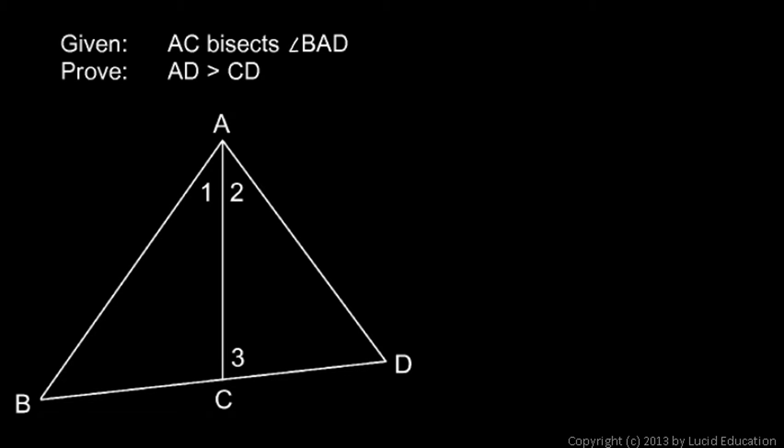Here's another proof. We're given that AC, this segment, bisects angle BAD, bisects this angle, and obviously that means that those two angles have to be equal. We're trying to prove that AD, this piece here, is greater than CD. AD is greater than CD.